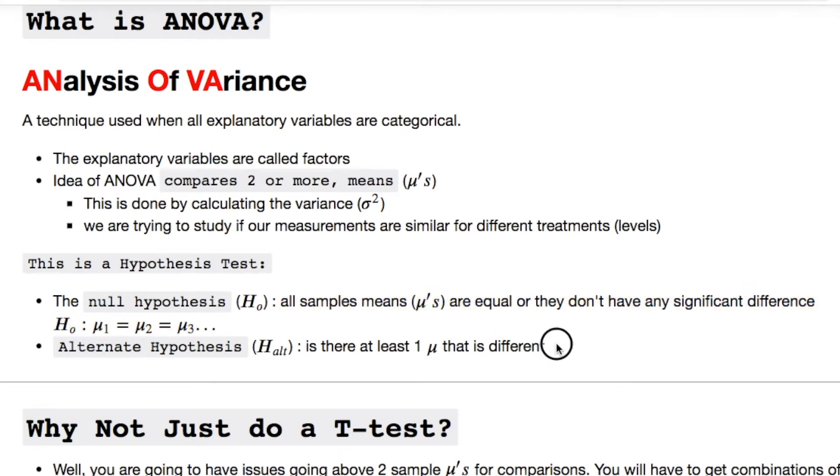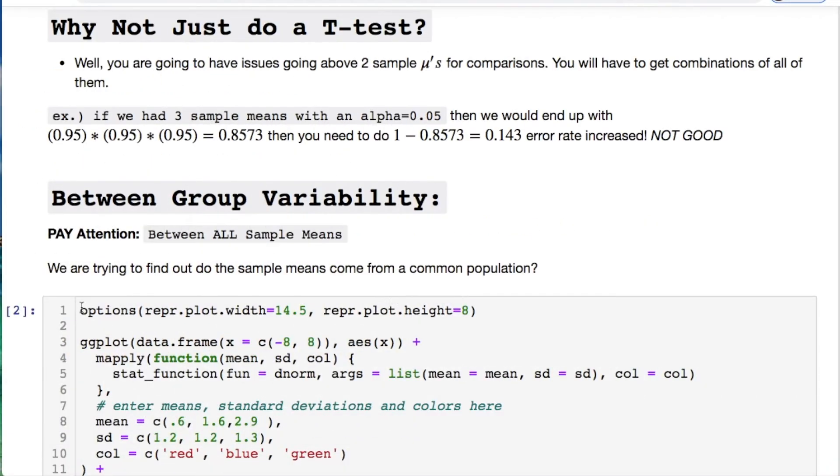We're trying to study if our measurements are similar for different treatments which are called levels. The null hypothesis states that all the means are equal or they do not have any significant difference. Otherwise the alternate hypothesis says there is at least one mean that is different. Why not just use the t-test? Think about this.